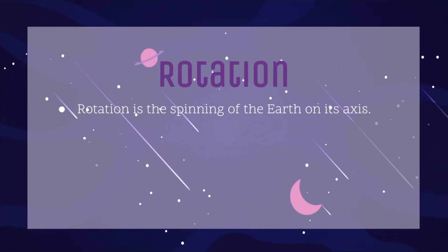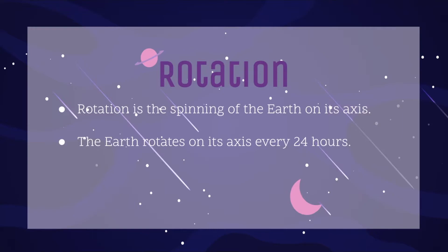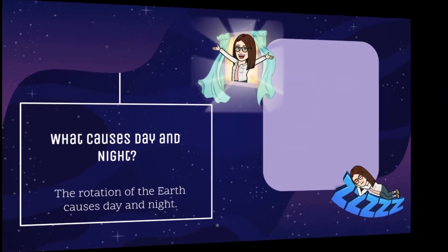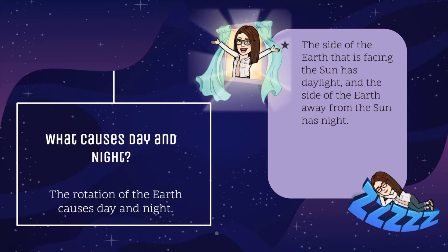Rotation is the spinning of the Earth on its axis. The Earth rotates on its axis every 24 hours, at a speed of 1,660 kilometers per hour, or about 1,000 miles per hour. The rotation of the Earth causes day and night. The side of the Earth facing the Sun has daylight, and the side away from the Sun has night. It takes 24 hours for the Earth to complete one rotation.